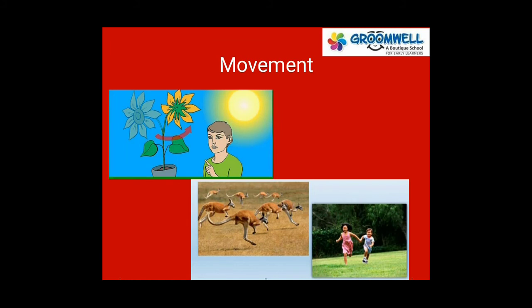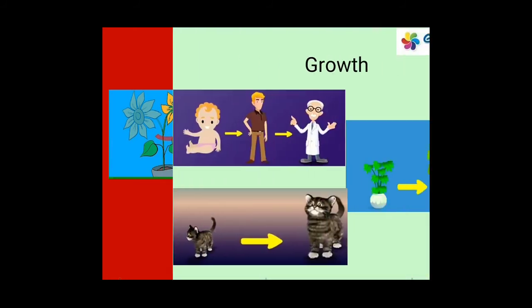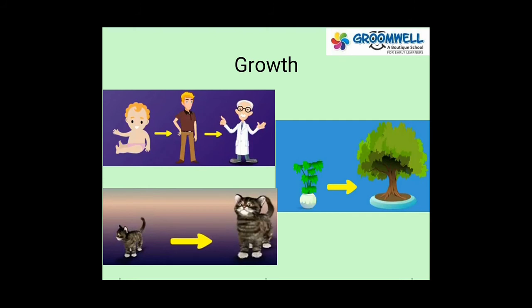Movement. Living things move. Most animals have four limbs which they use to walk or run from one place to another. As you can see in the picture, plants, animals and human beings all move differently. We have two legs that help us walk, run, jump and make many other movements. Plants cannot move — they are always rooted in one place.